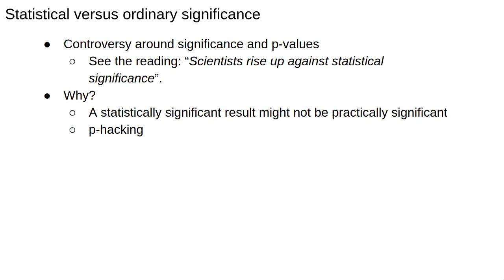There's actually a lot of controversy around significance and p-values. See for example the reading, scientists rise up against statistical significance. There are several reasons for this. Two of the main ones are that, one, a statistically significant result might not be practically significant, and two, a practice known as p-hacking.